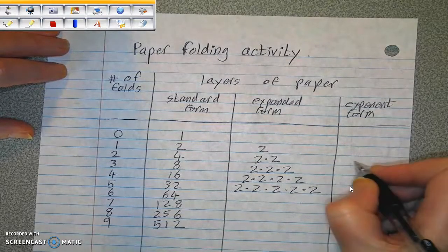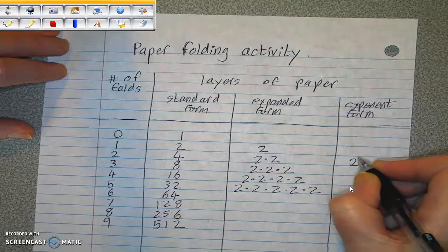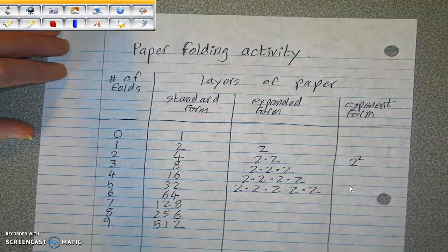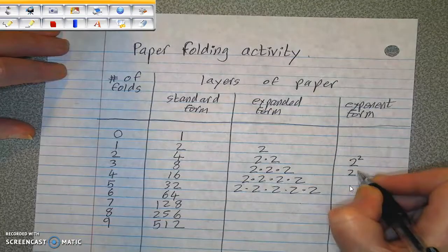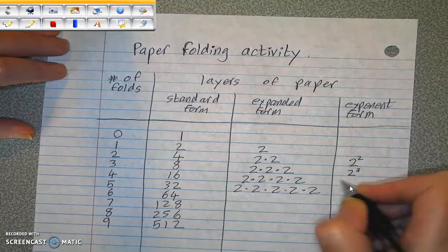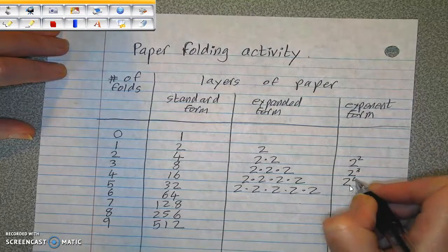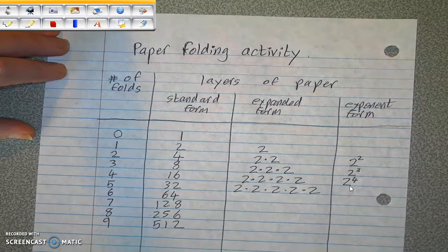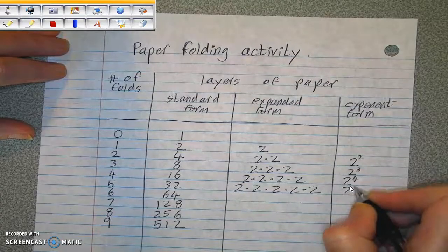In exponent form, this is 2 squared. This is 2 to the power of 3. This is 2 to the power of 4. And this is 2 to the power of 5.